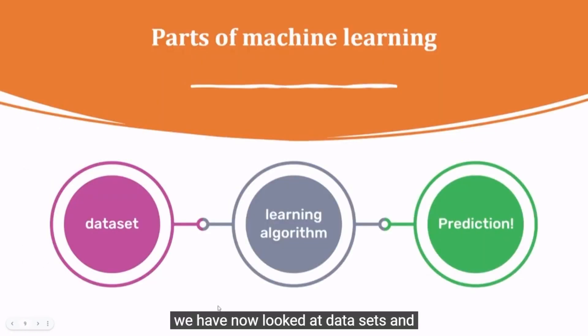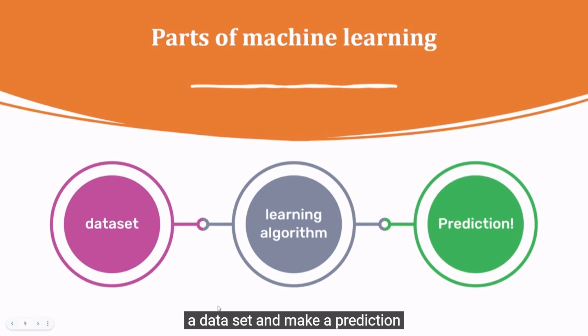We have now looked at data sets and predictions. But how does a machine take a data set and make a prediction? It needs an algorithm for that.